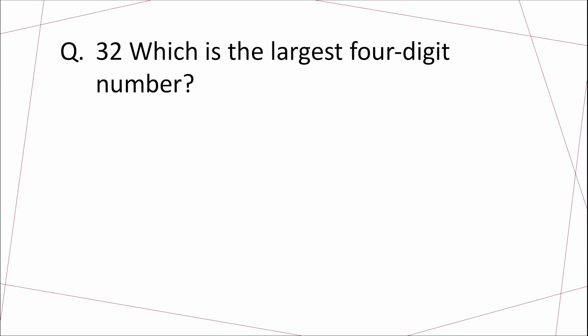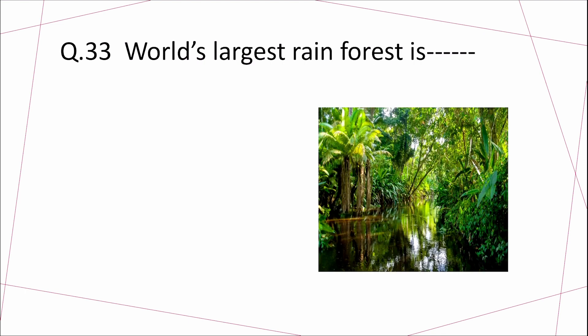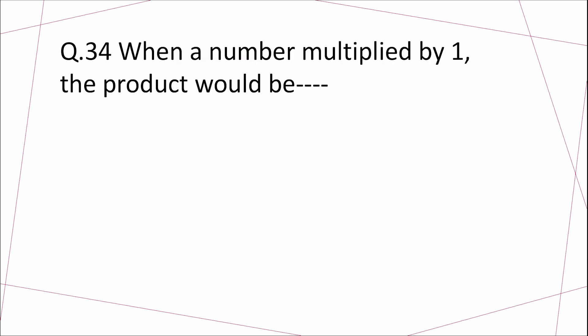Question 32: Which is the largest four-digit number? Answer: 9999. Question 33: The world's largest rainforest is? Answer: The Amazon. Question 34: When a number is multiplied by 1, the product will be? Answer: The same number.